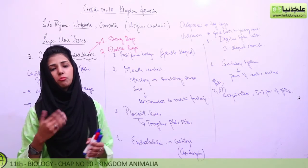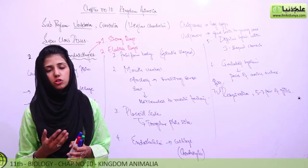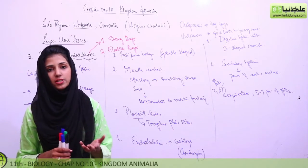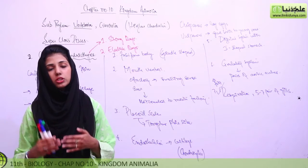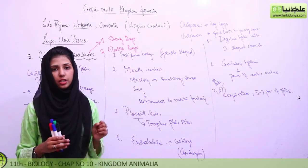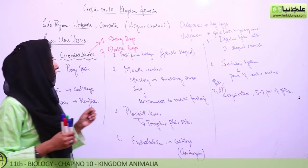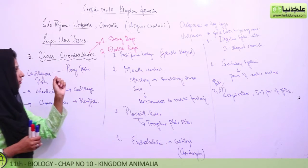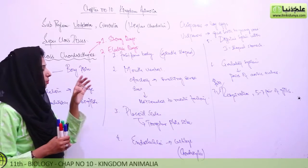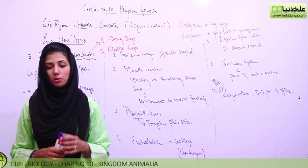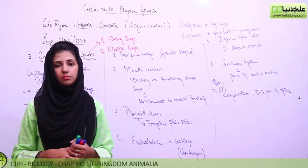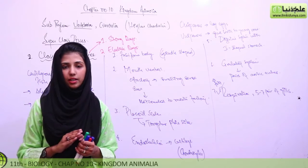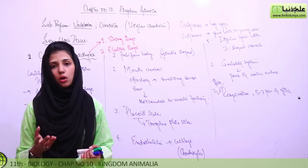The electric ray can produce an electric current and can stun prey for a second or two, reducing the prey's ability to escape.